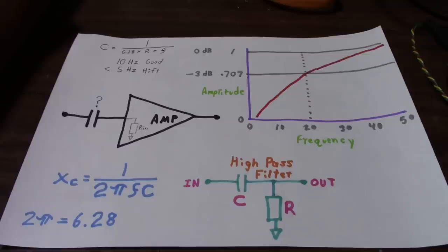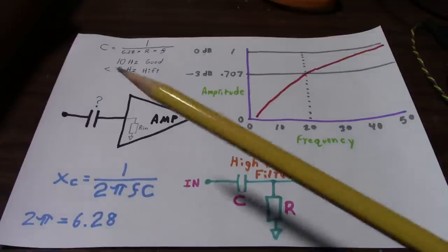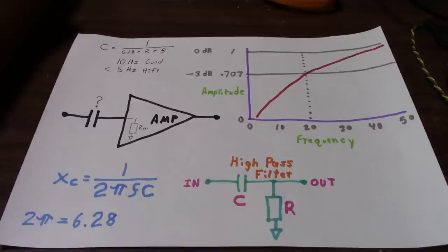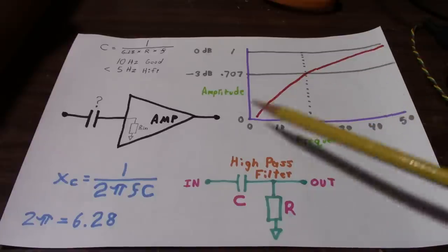Now I'm not going to get into a bunch of filter theory, but one problem with the coupling capacitor on the input, it forms what is known as a high-pass filter. And if the value of that capacitor is too small, it'll roll off your base frequencies too early.